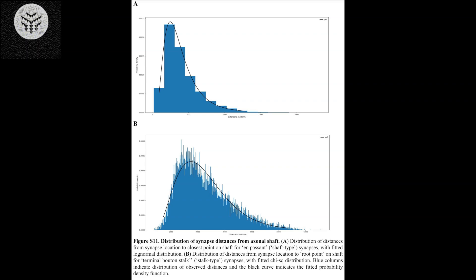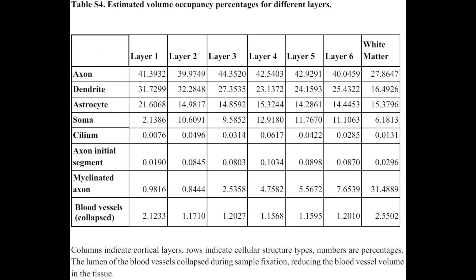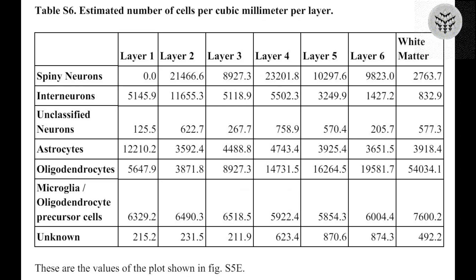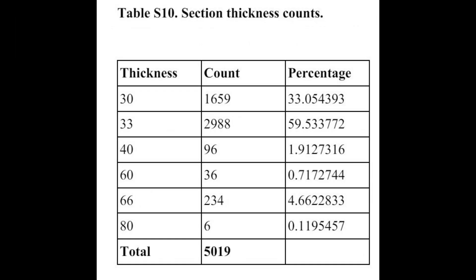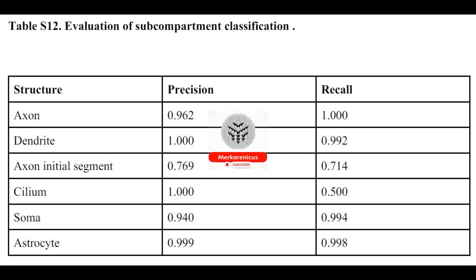Under the leadership of Jeff Lichtman, the Jeremy R. Knowles Professor of Molecular and Cellular Biology and recently appointed Dean of Science, a team from Harvard University has collaborated with researchers from Google to produce the most extensive synaptic resolution 3D representation of a section of the human brain thus far. This remarkable achievement unveils intricate details of individual cells and their interconnected neural networks within a portion of the human temporal cortex approximately half the size of a grain of rice.